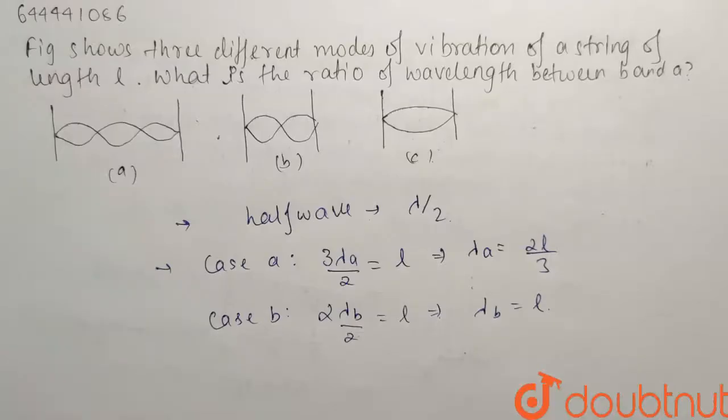Now in the question, we have to find out the ratio of wavelength of B is to A. So lambda B is to lambda A will be nothing but lambda B divided by lambda A that will be equals to 1 upon 2 by 3 that is 3 is to 2. So the ratio lambda B is to lambda A comes out to be equals to 3 is to 2.